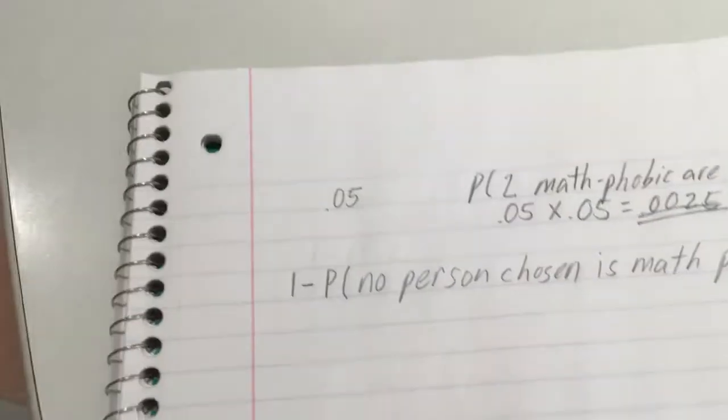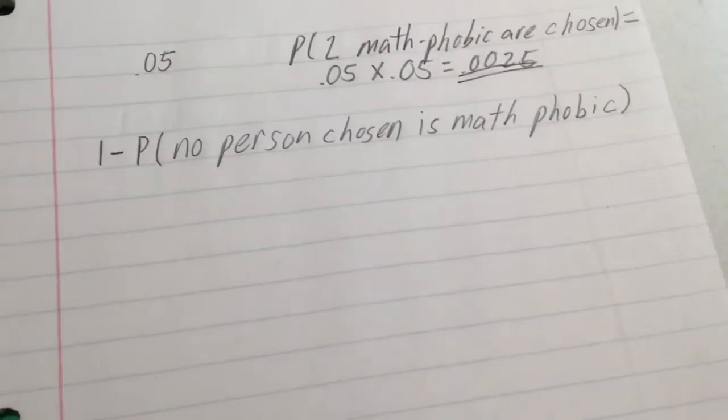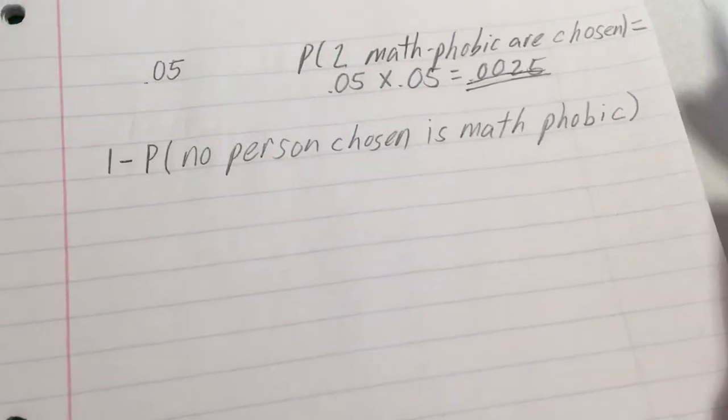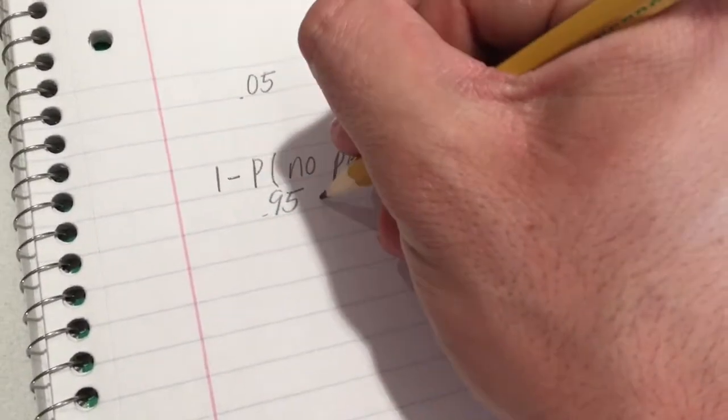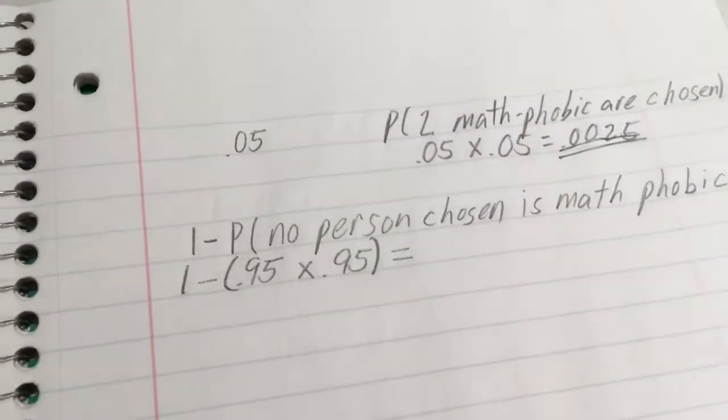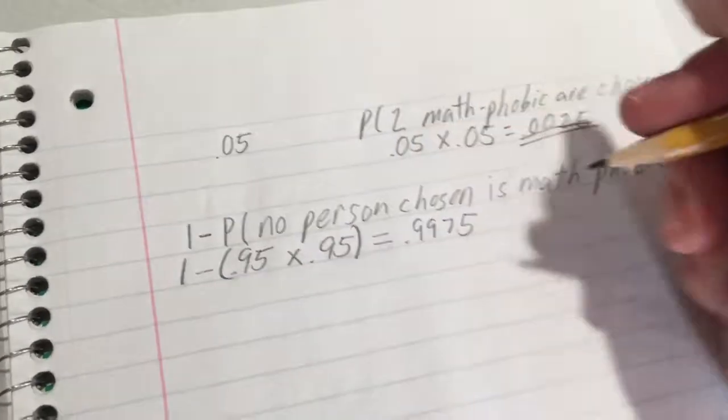To find the probability that no person chosen is math-phobic, we multiply 0.95 by 0.95, since 0.05 of the population is math-phobic. Then subtract that from 1, which equals 0.9975.